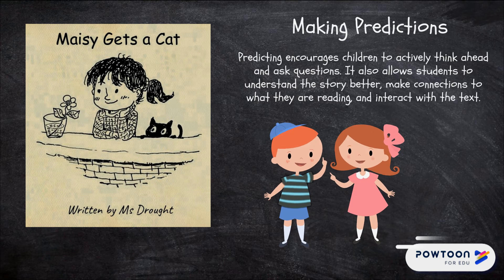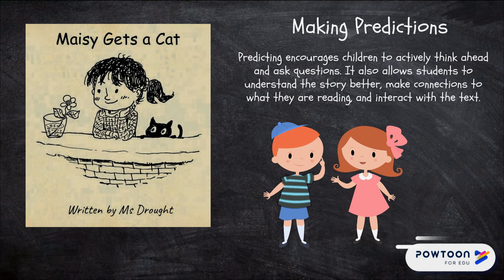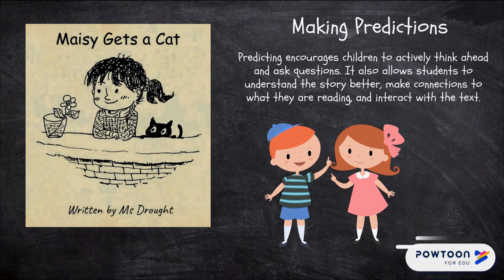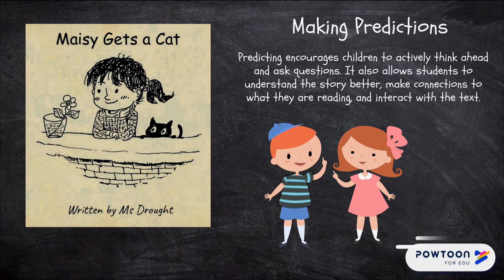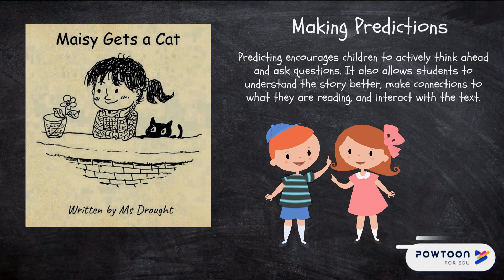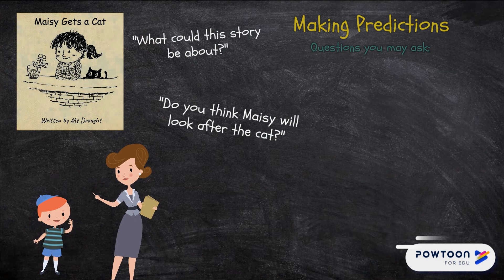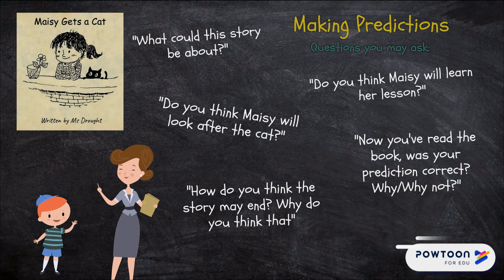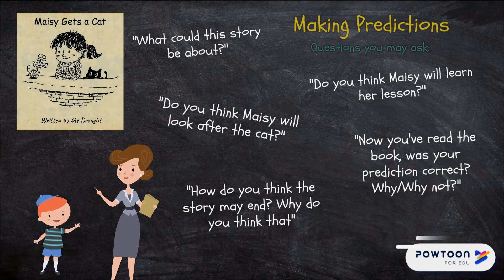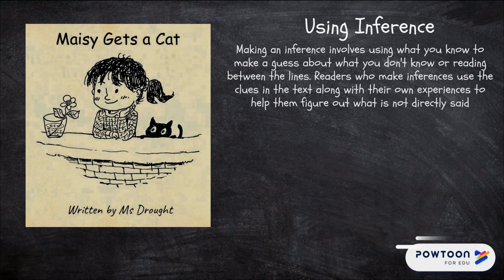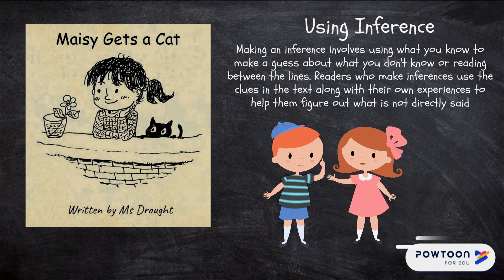Making predictions: predicting encourages children to actively think ahead and ask questions. It also allows students to understand the story better and make connections to what they're reading. What could the story be about? Do you think Maisie will look after the cat? Do you think Maisie will learn her lesson? Now you've read the book — was your prediction correct? Why or why not?